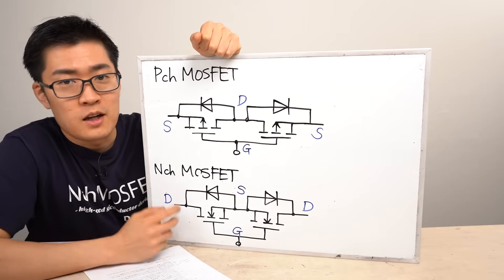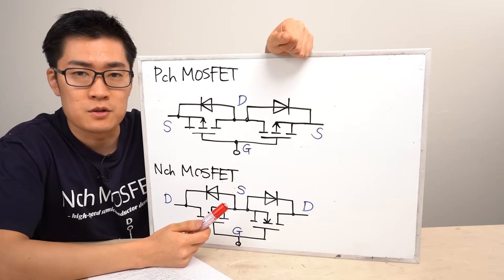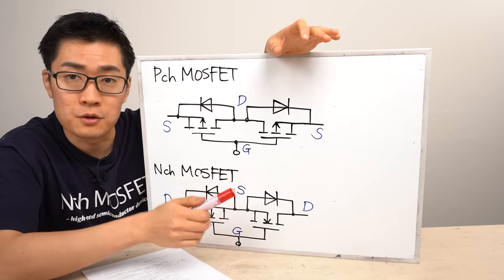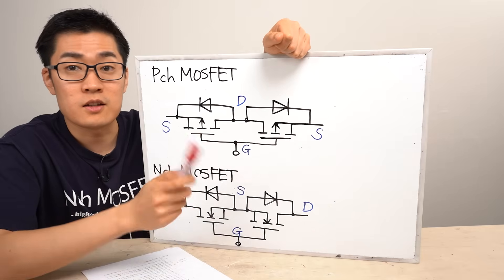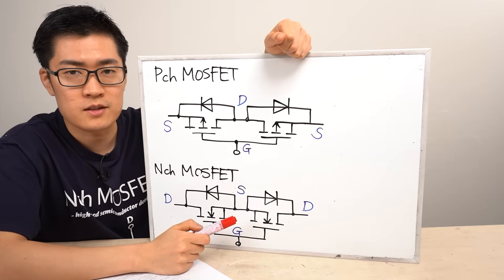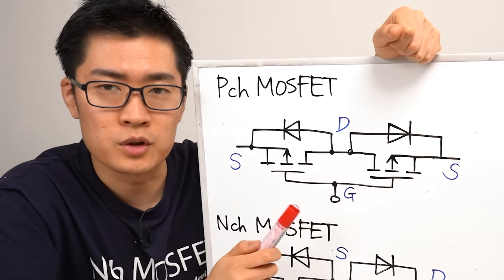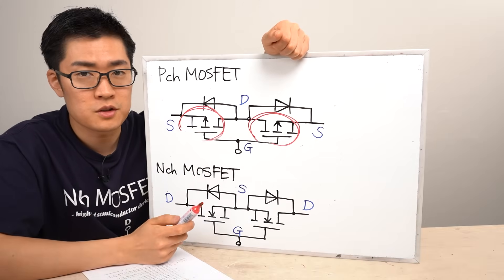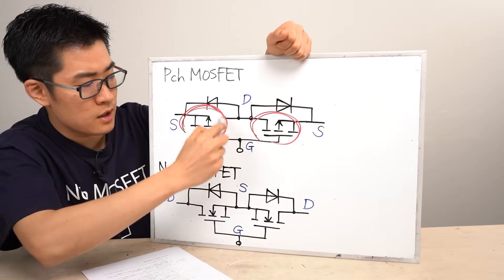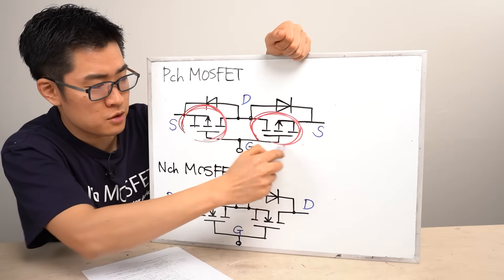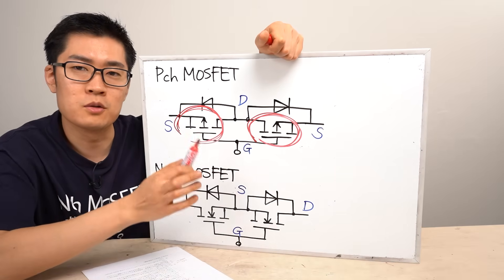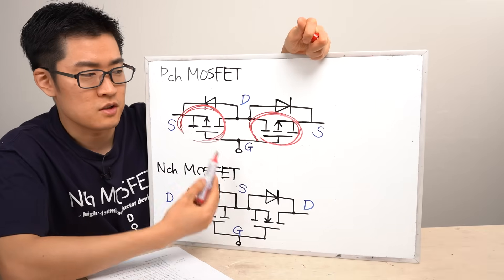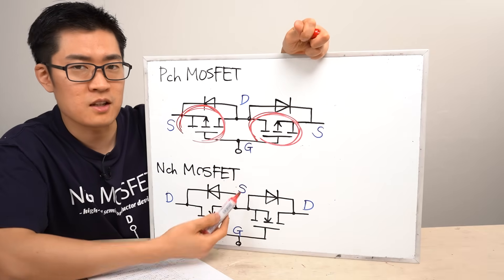The next design decision is whether to use a P-channel or N-channel MOSFET. One benefit of using a P-channel MOSFET is that it generally doesn't require a dedicated gate drive power supply, which helps simplify overall circuit design. However, a notable drawback is that the on-resistance of a P-channel MOSFET is generally higher than that of an N-channel MOSFET, leading to greater power loss during operation. Additionally, low on-resistance, high-current P-channel options are relatively limited in the market, making them challenging to use in high-current load switch designs.